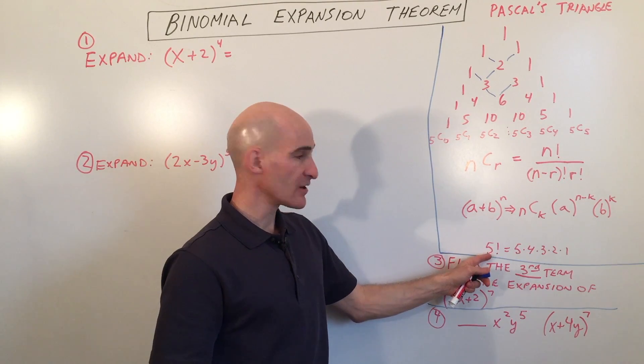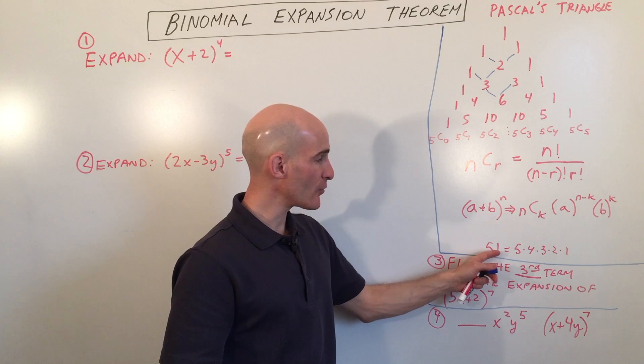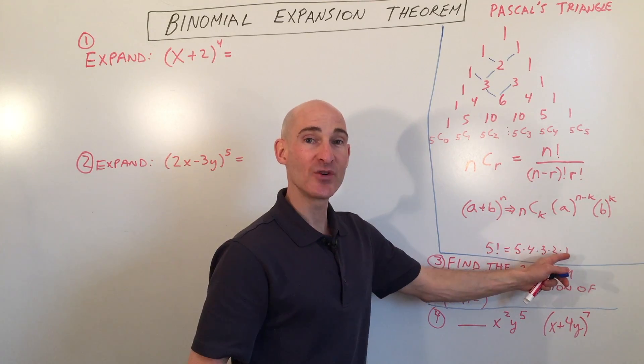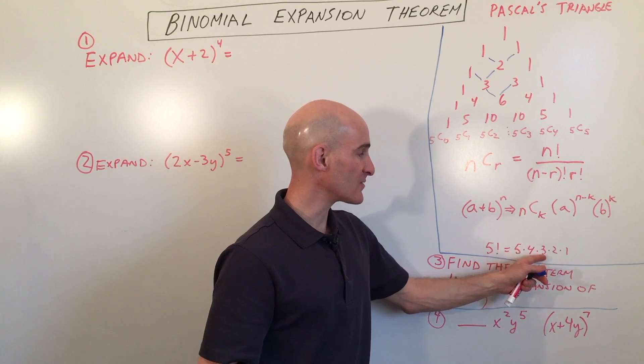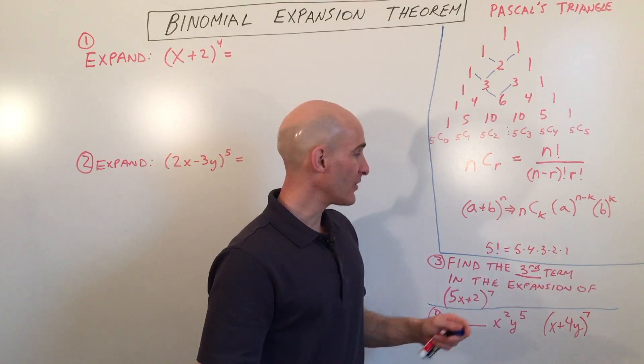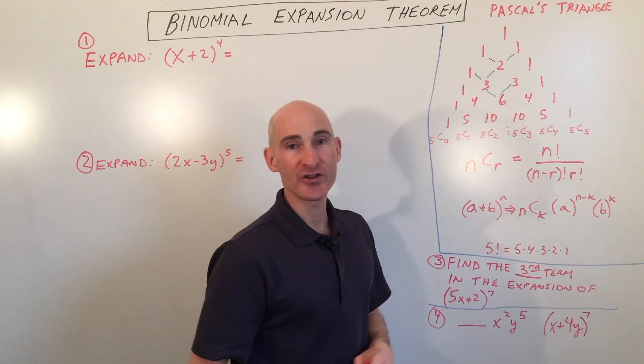Factorial, you just start off like, see here, 5 factorial, you start off at that number, and you multiply down to 1. So it'd be like 5 times 4 times 3 times 2 times 1. So in this case, that's going to be 120.